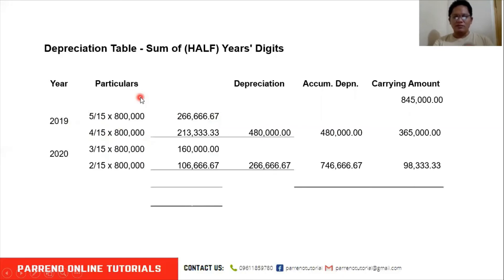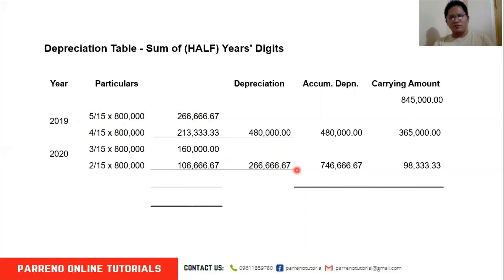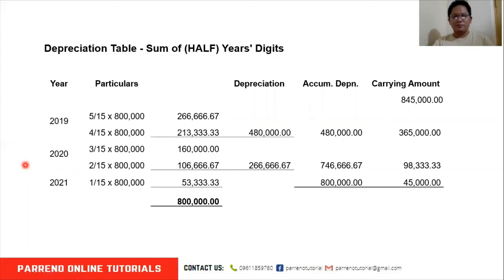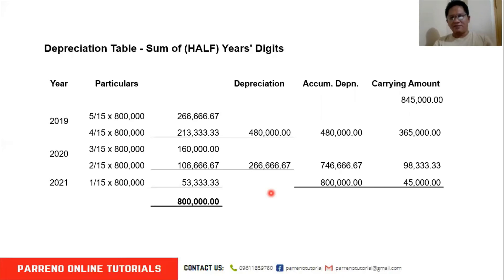In 2020, we follow the same approach using 3/15 and 2/15 times the depreciable cost. The total depreciation for that year is $266,667. Remember, the life of the asset is only 2.5 years, so we have only one fraction left for the final half-year: 1/15 times $800,000 gives $53,333. That's how we apply SYD when an asset has a life with a decimal point.